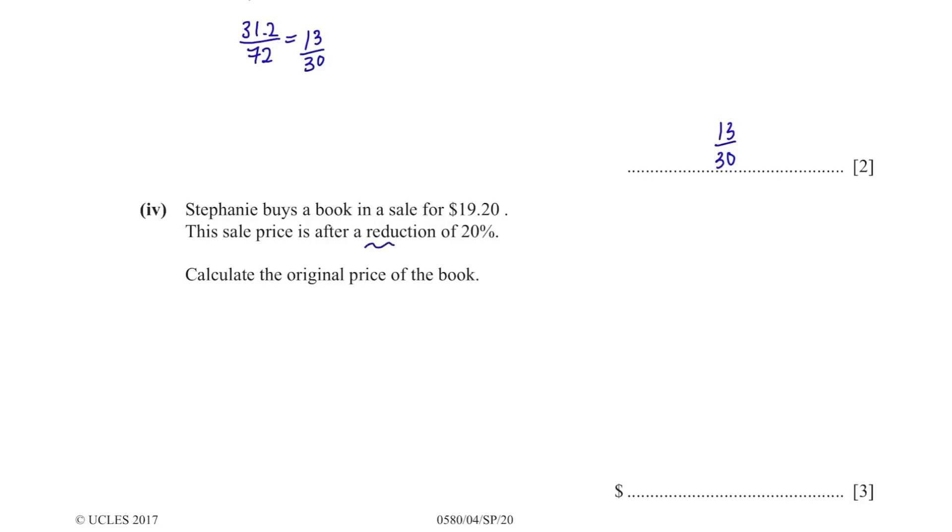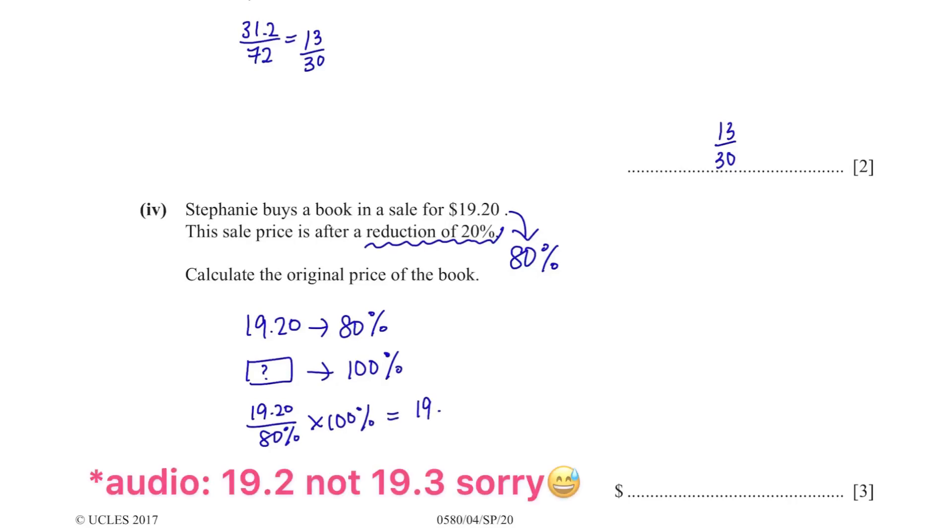If this is a price after a reduction of 20%, it means that it stands for 80% of the original price. Which means 19.20 stands for 80% and we need to find the value at 100%. So divide 19.2 with 80% and multiply it by 100%. This is the same as just dividing 19.2 with 0.8. The answer is 24. This is the original price of the book.